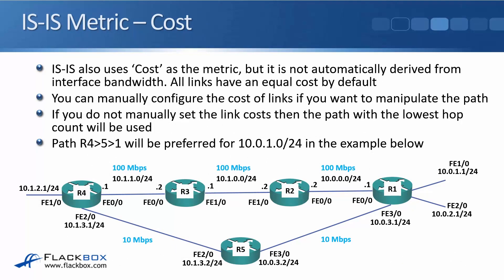ISIS also uses cost as the metric, but unlike OSPF, it's not automatically derived from interface bandwidth — all links have an equal cost by default. So if you want to force a particular path in ISIS based on bandwidth, you have to manually configure that; it won't do it automatically like OSPF does. If you don't manually set the link costs in ISIS, in our example the lowest hop count will be used, which is the bottom path — R4 to R5 to R1.